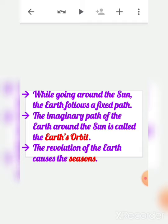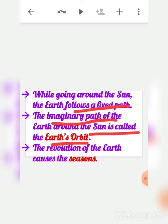While going around the sun, the earth follows a fixed path. Just as rotation has the imaginary axis, the imaginary path of the earth around the sun is called the earth's orbit. The revolution of the earth causes the seasons — summer, winter, rainy, autumn, and spring seasons are all because of revolution.